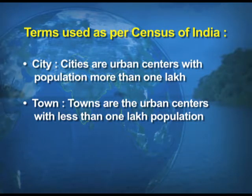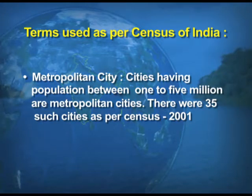We'll be taking up a few terms used as per the Census of India. Number one: cities are urban centers with a population of more than one lakh. Number two: towns are urban centers with a population of less than one lakh.